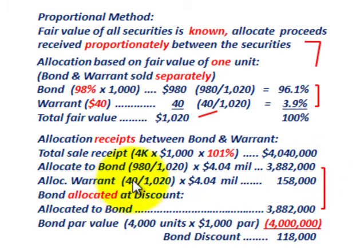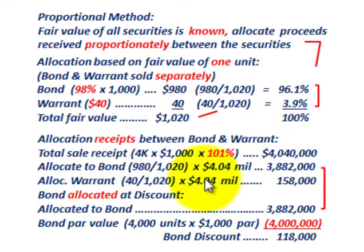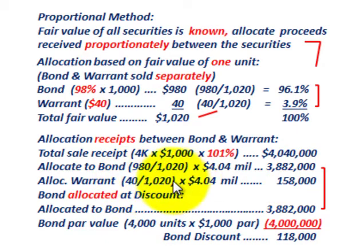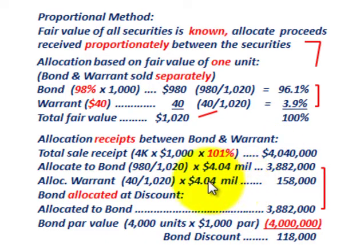Allocating to the warrant, we use its fractional amount — $40 divided by $1,020 — times total sales receipts of $4,040,000, which gives us $158,000 allocated to the warrant.